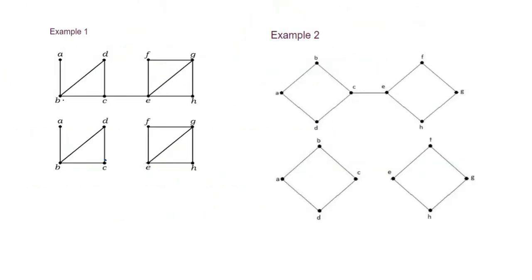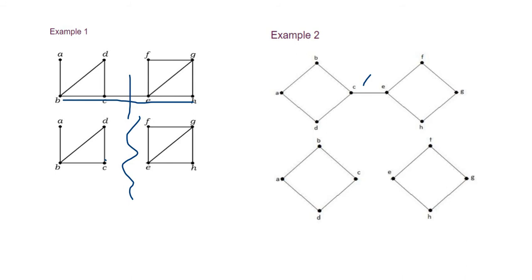Let's see how a cut edge works in an example. In example one, we have connectivity for B to F — that is edges B–C, C–E, and so on. When I cut edge C–E away, it results in two disconnected graphs. Similarly in example two, if I remove edge C–E, it also results in a disconnected graph.